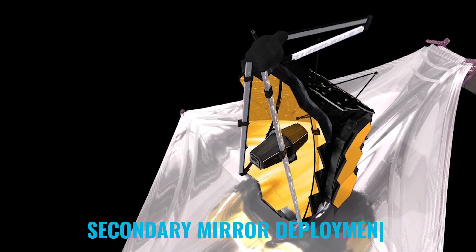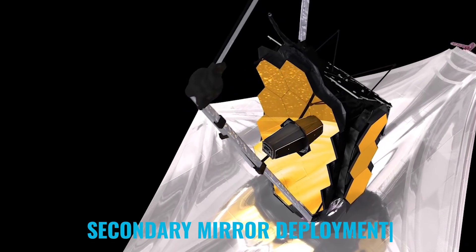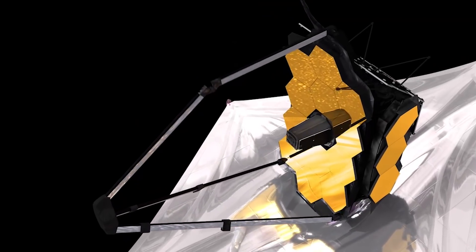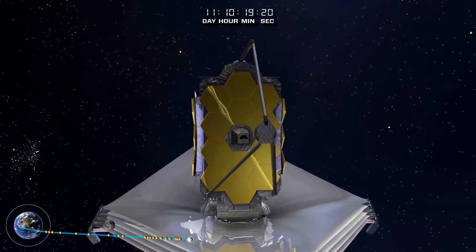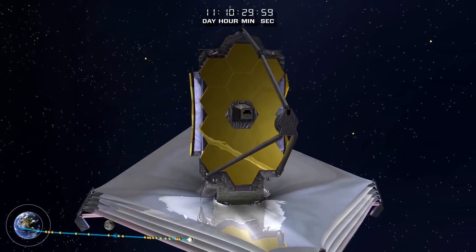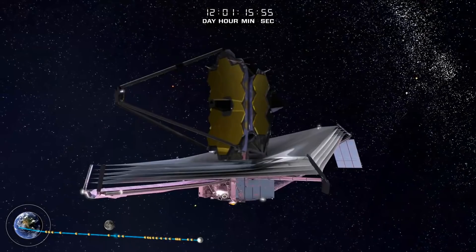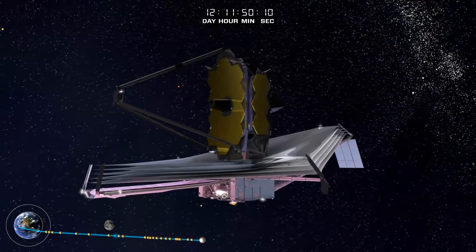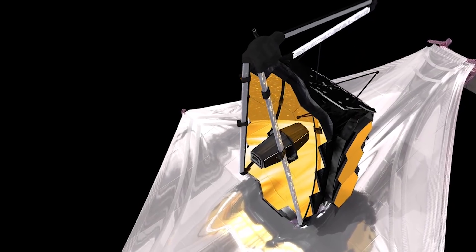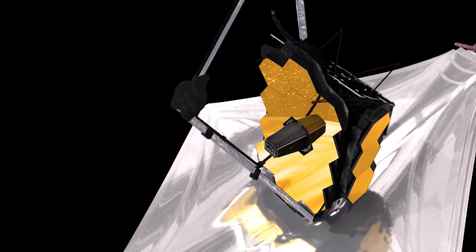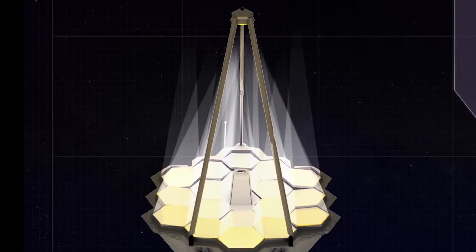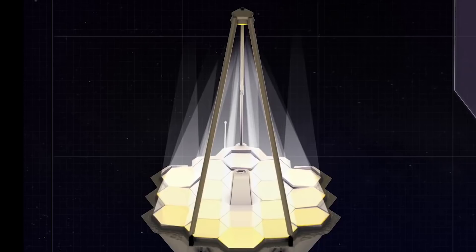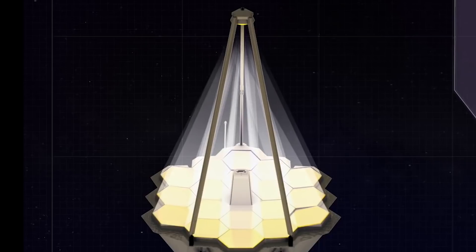Secondary mirror deployment. The deployment team begins planning and operations for the deployment of the Secondary Mirror Support Structure from its stowed launch position into its operational position. Webb's secondary mirror is at the end of this structure. As it is deployed, its long booms will swing the secondary mirror out in front of the primary mirror. The secondary mirror plays an important role in reflecting the light from the primary mirror to where the instruments sit, behind the primary mirror.